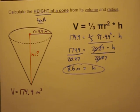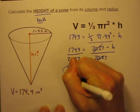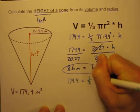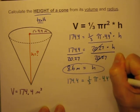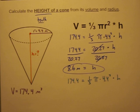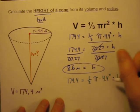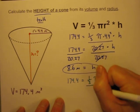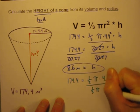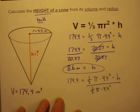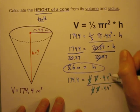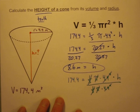Another way to solve this kind of eliminates the rounding error problem. Let's rewrite the problem: 174.4 equals one third times pi times 4.4 squared times the height. Instead of multiplying those terms together first, let's immediately divide both sides by one third times pi times 4.4 squared. The benefit is that one third divided by one third cancels, pi divided by pi cancels, and 4.4 squared divided by 4.4 squared cancels — leaving just h on the right side.